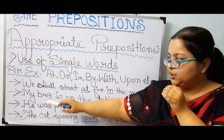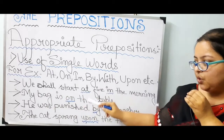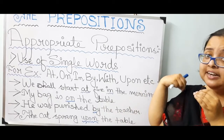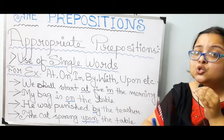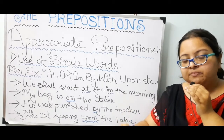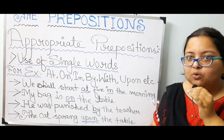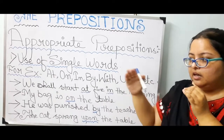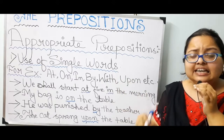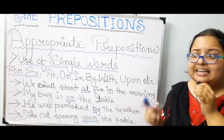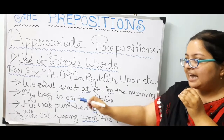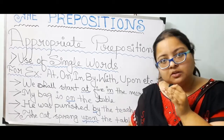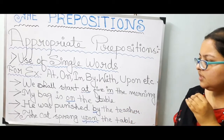Next, number 2: my bag is on the table. When you are keeping your bag somewhere, your bag has to touch that surface. So I am keeping my bag at a place, and it is going to touch that surface — so my bag is on the table, put on the table.